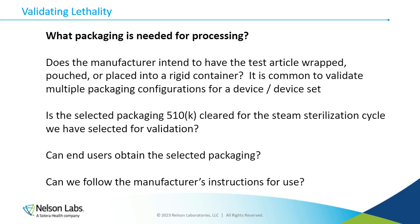We need to decide what packaging to use during validation, which will be included in the device instructions for use. Does the manufacturer intend to have the test article wrapped, pouched, or placed into a rigid container? Sometimes we see a combination. It's very common to see a test article set that is wrapped and also placed into a rigid container as two separate packaging options, and it is common to validate multiple packaging configurations. The selected packaging must be 510(k) cleared for the particular sterilization cycle, and end users must be able to obtain the selected packaging when following the manufacturer's IFU.